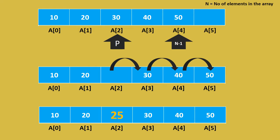Now let us consider an array having 5 elements: 10, 20, 30, 40, and 50. But how many elements are placeable in this array? Totally, the array has 6 locations.